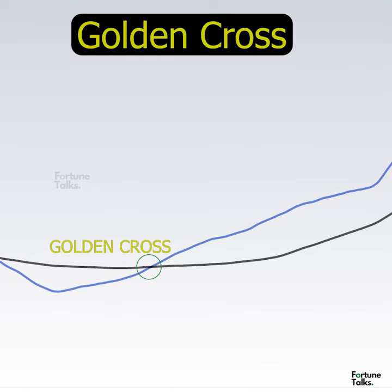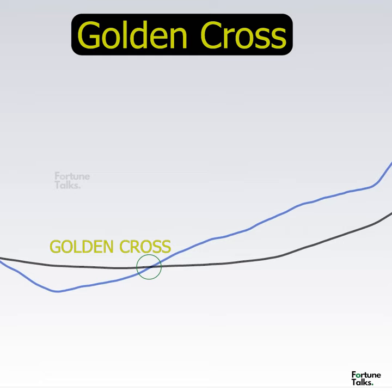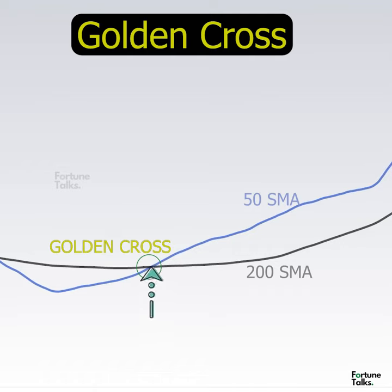A golden cross occurs when a faster moving average crosses a slower moving average. Specifically, you need the 50-period and 200-period simple moving averages. Directionally, a golden cross happens when the 50-period moving average crosses above the 200-period moving average.